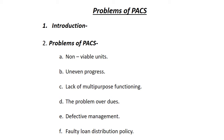The Vaidyanathan Committee in 2005 quoted that PACS should work as a multipurpose cooperative society. Before that, the A.D. Gorwala Committee in 1954 also quoted the same. It means PACS working at village level can provide a variety of facilities to rural people. Overall rural development depends upon the functioning of PACS. But at present, more than 60% of the multipurpose cooperative societies cannot perform their functioning, meaning near about 60% of PACS are not doing their job, and rural people's needs remain unfulfilled.